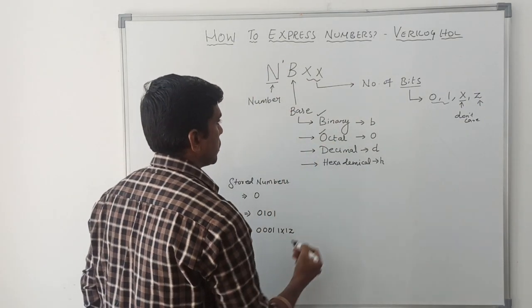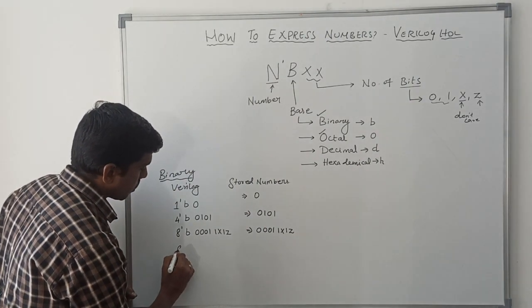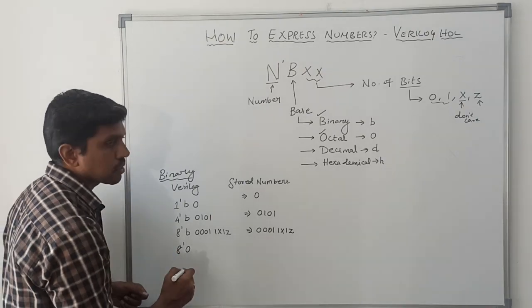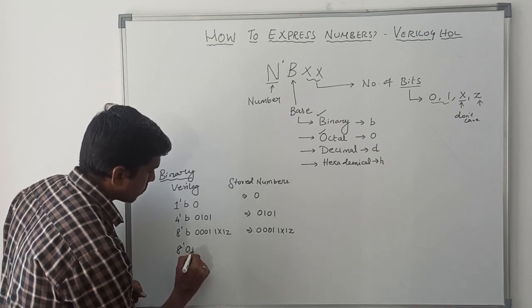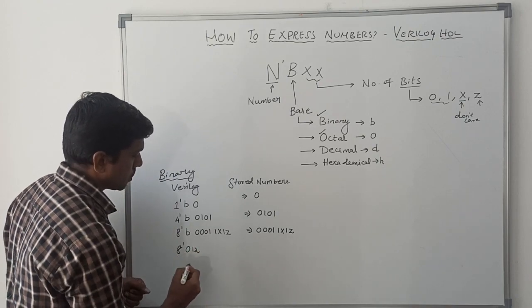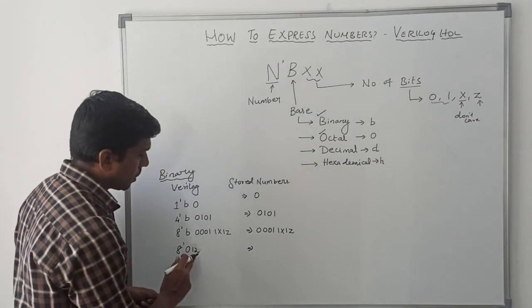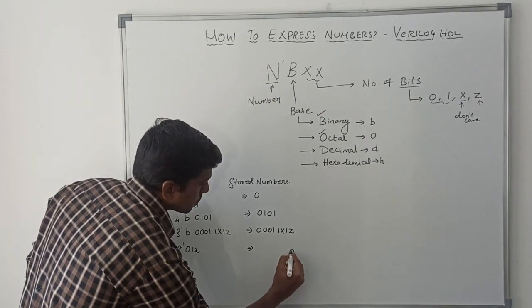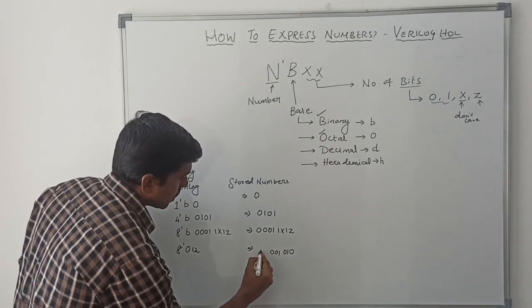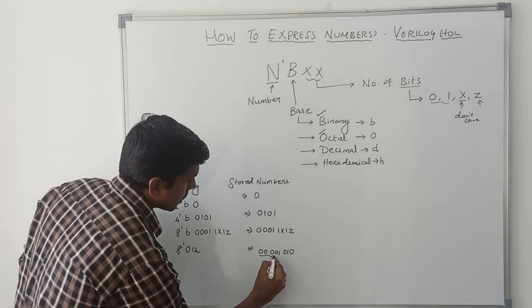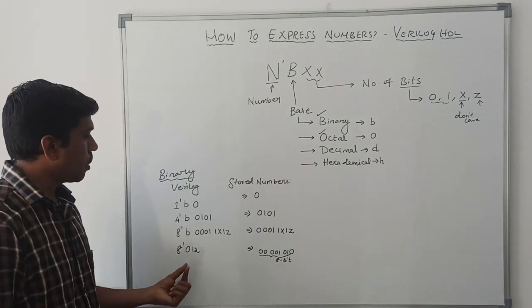Then, we go for octal. Next one is octal. I need to represent 8 bit values. 8 tick O. This O represents octal. Let me take the value 12. 12 is the value. The stored number is 00100101. Totally, it's 8 bit. Likewise, you represent the octal number system.